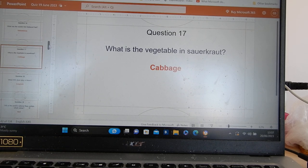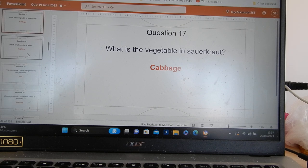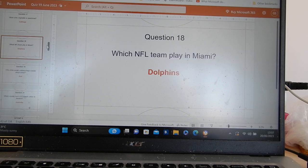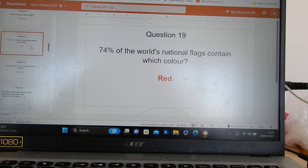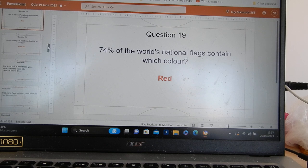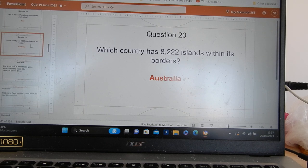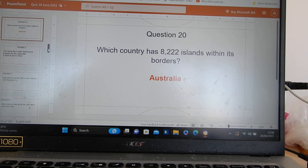Yellowstone was the world's first national park. The cabbage is the vegetable in sauerkraut. And the dolphins. Of course, the Miami Dolphins. Dan Marino and all that. It's red. 71% of the world's national flags have the color white. 74% have red. And which country has 8,222 islands? I like this one because it was unexpected. It was Australia.